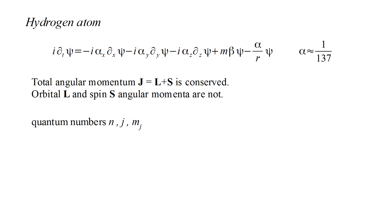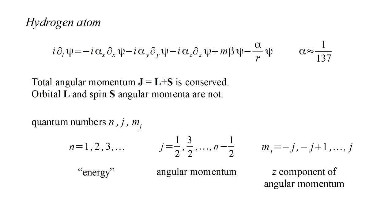The solutions are described by three quantum numbers, n, j, and m sub j. n largely specifies the energy level, and takes on the values one, two, three, and so on. j specifies the total angular momentum, and also slightly affects energy. It takes on values one-half, three-halves, and so on, up to n minus one-half. m sub j specifies the z component of angular momentum. It takes on values minus j, minus j plus one, and so on, up to j.